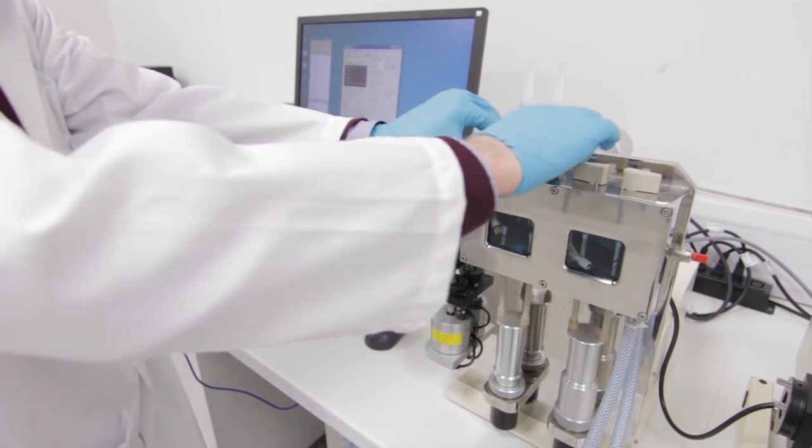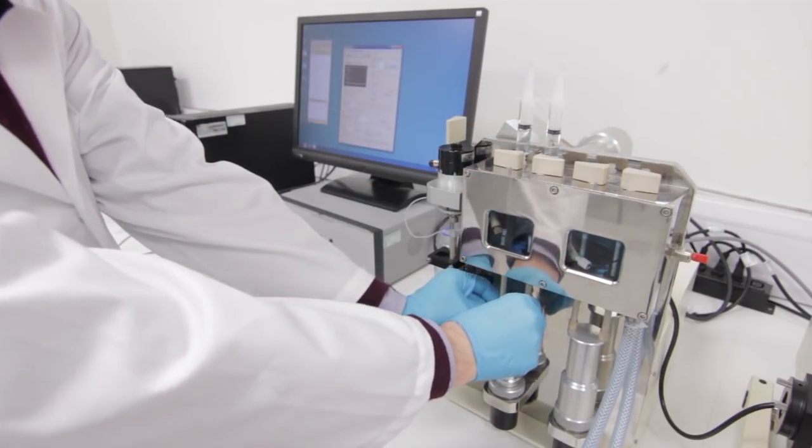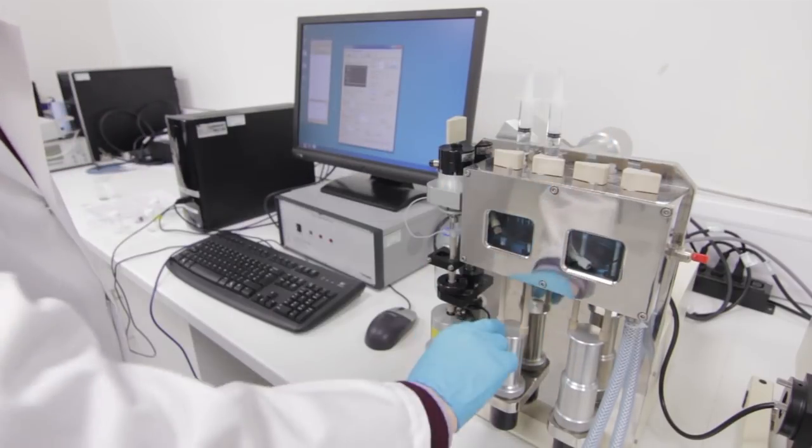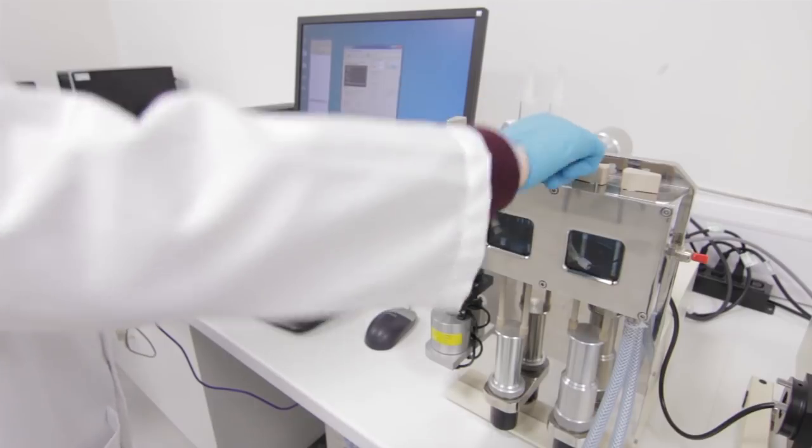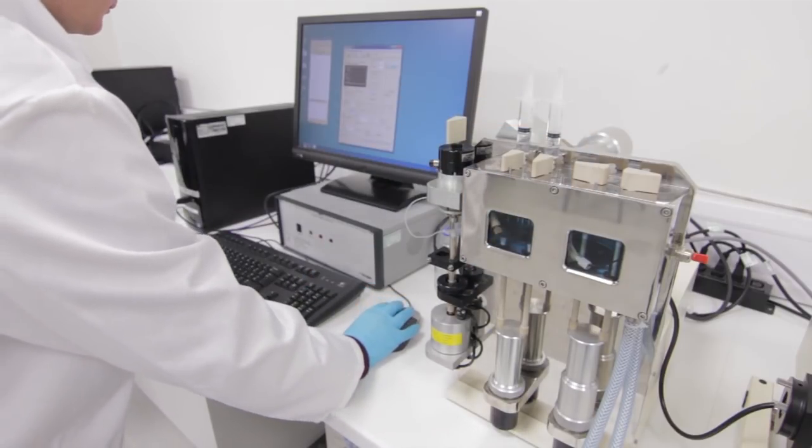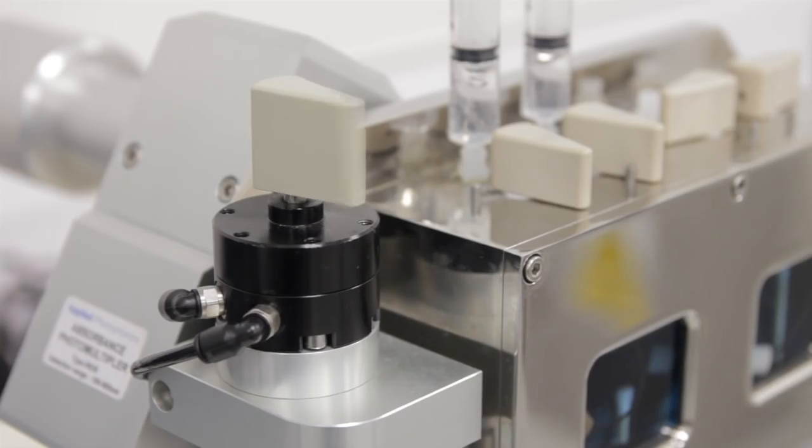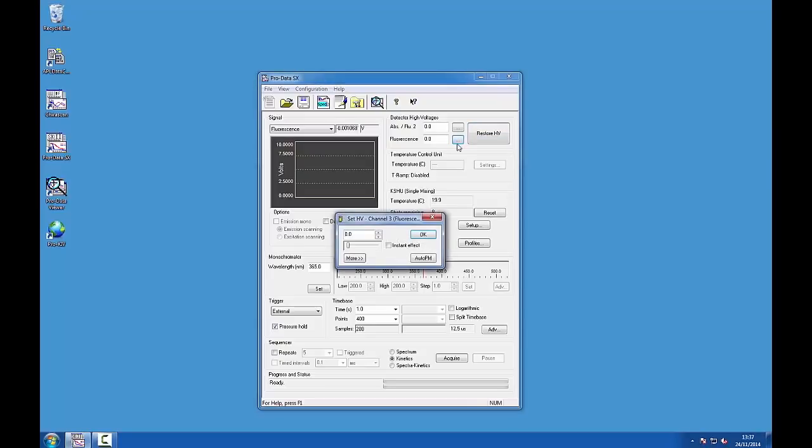To fill the cell, load the drive syringes, again ensure bubbles aren't introduced, and set the drive valves to the drive position. Click the drive button several times to fill the cell, and click the button next to the fluorescence box on the detector high voltages panel and click auto PM in the dialog box to set the high voltage.